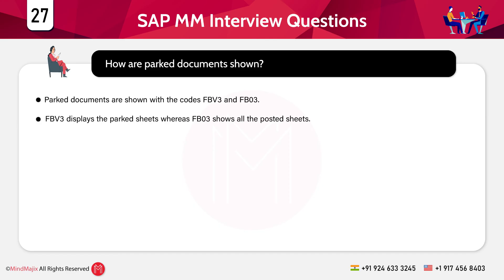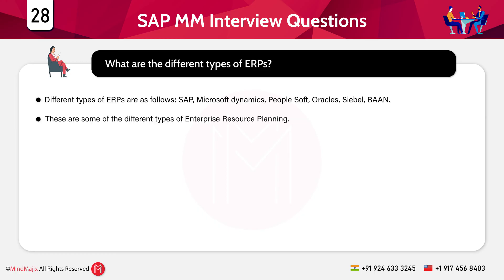The next question is: how are parked documents shown? Parked documents are shown using codes FBV3 and FB03. FBV3 displays parked documents, whereas FB03 shows all posted documents. It is useful to use FBV3 if one needs to know if any documents still need approval or completion.